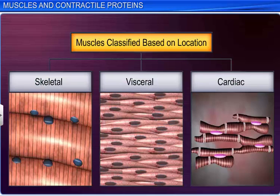Based on their location, muscles are classified into three types: namely, skeletal, visceral, and cardiac.